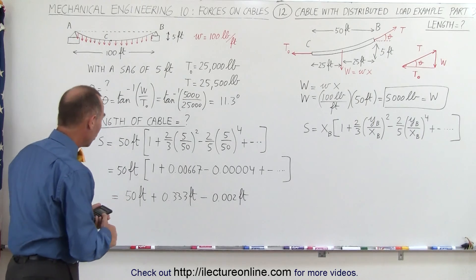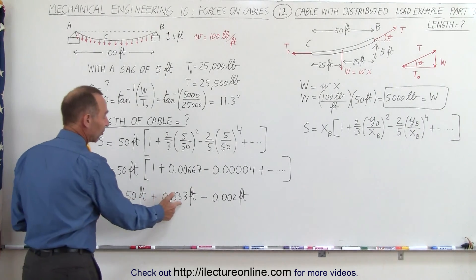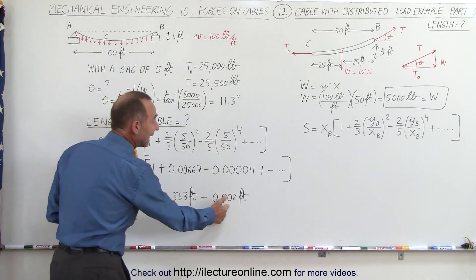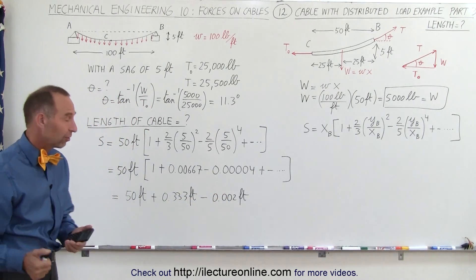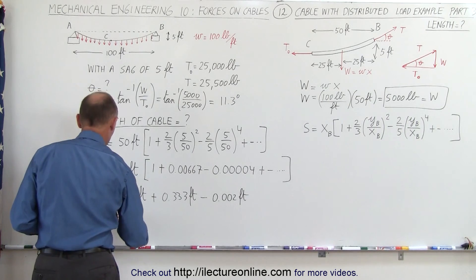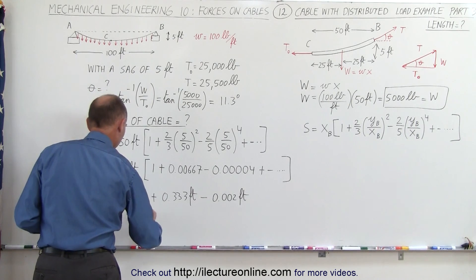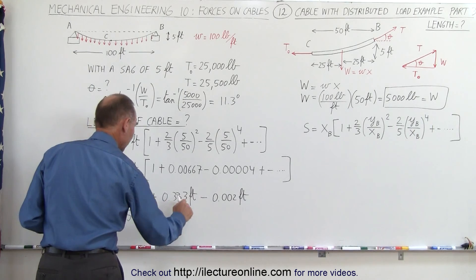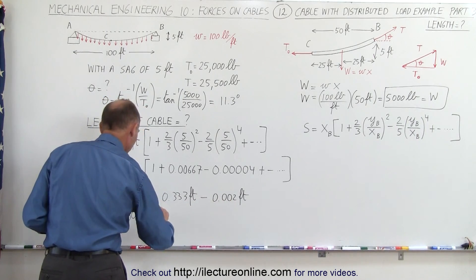But obviously, relative to the horizontal distance of 50 feet, this is very small, and this is really insignificant. That's 2 thousandths of a foot. We don't worry too much about that. So this would be equal to 50.33, and then if you add this 2 to that, that would be 3, oh that's subtracted, that would be 331 feet.